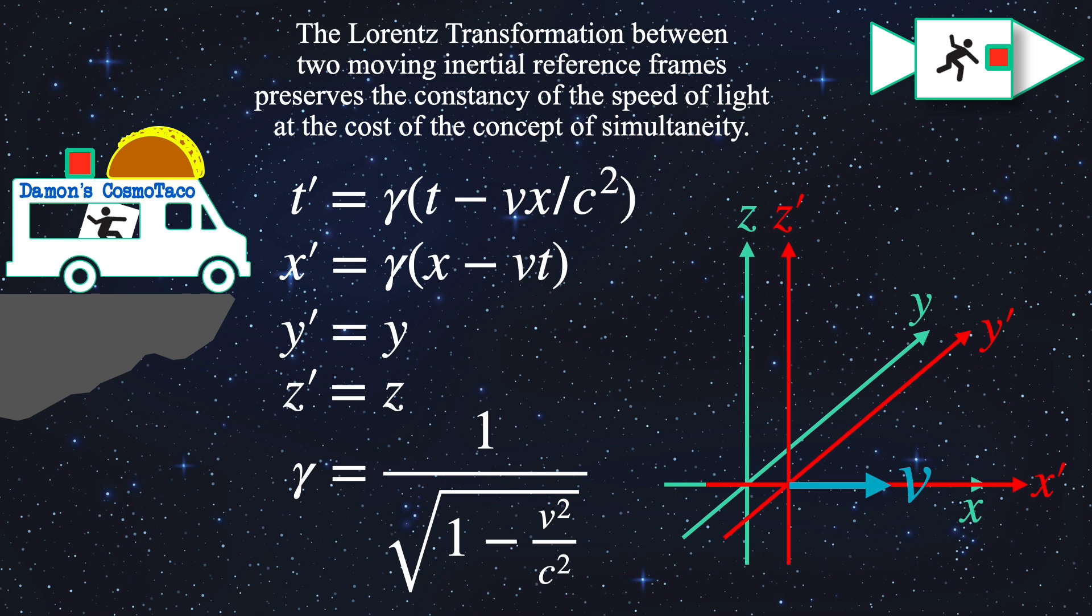These are the four equations that transform coordinates in a rest frame to a moving frame. On the right, we have two frames of reference. The red frame would be Travis's frame, and the green frame is Damon's frame. Travis is the prime frame moving to the right at speed v. Here that's 80% the speed of light.